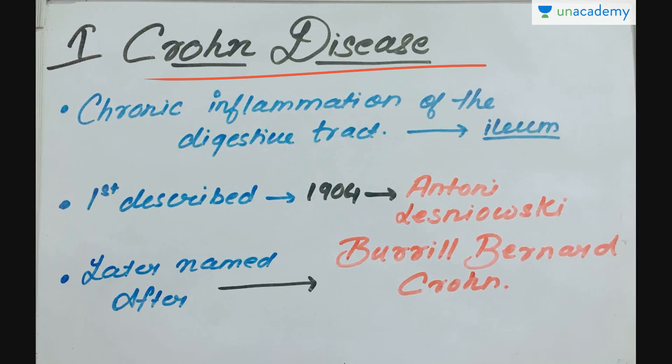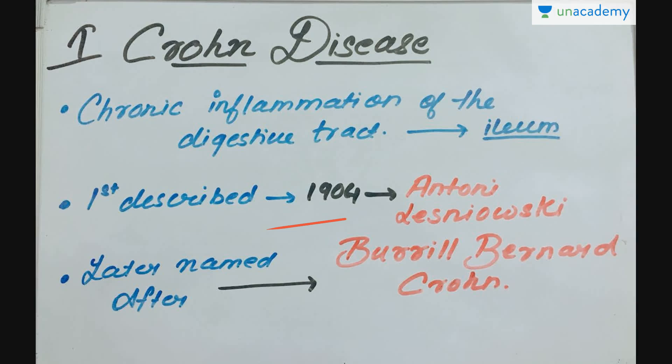Crohn's disease is the chronic inflammation of the digestive tract, usually occurring in the terminal portion of the ileum, a part of the small intestine. It was first described in 1904 by a Polish surgeon, Anthony Lennoski, and was later named after an American gastroenterologist, Beryl Bernard Crohn.